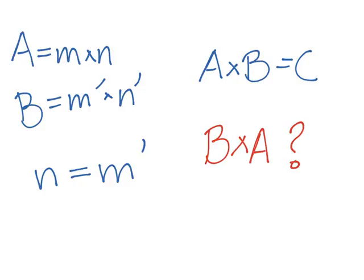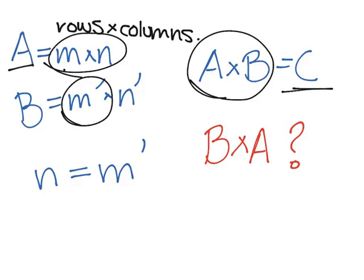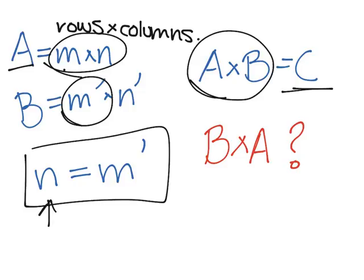If we say that A is a matrix with dimensions M times N — and recall that when we represent the size of a matrix, we always do rows times columns — and B is M-prime times N-prime, and we want to multiply these two to equal C, then N, which is the number of columns of A, must equal the number of rows of B.